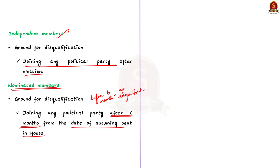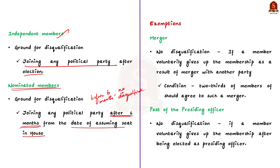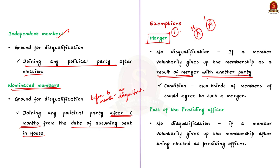There are some exceptions in the anti-defection law. The first exception is regarding the merger. If a member voluntarily gives up the membership of a party as a result of the original party being merged with another party, then they will not be disqualified. For example, if member A belongs to party A and party A decides to merge with party B, and member A does not like this decision and gives up membership, he will not be disqualified.